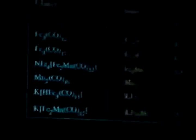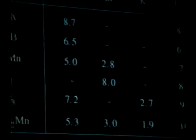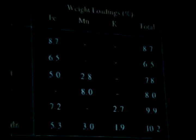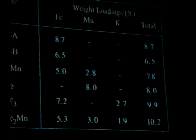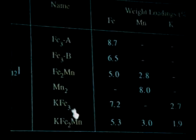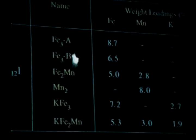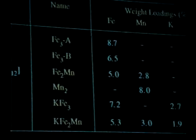Our activities per gram iron per second were definitely comparable to all the catalysts reported up to this point. Cell activities were comparable, especially for the FE2MN cluster and for the potassium-promoted clusters. We selected the catalysts listed, retaining a consistent order throughout the talk: the tri-iron dodecacarbonyl cluster, an unpromoted FE2MN cluster, MN2, and two potassium-promoted clusters with the manganese-containing cluster at the bottom. The weight loadings of iron were between five and eight percent, with iron-to-manganese ratios very similar to those expected from the clusters used.